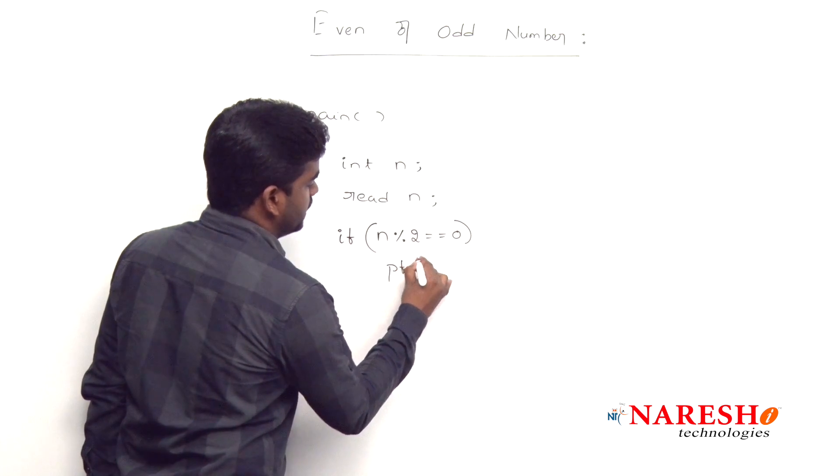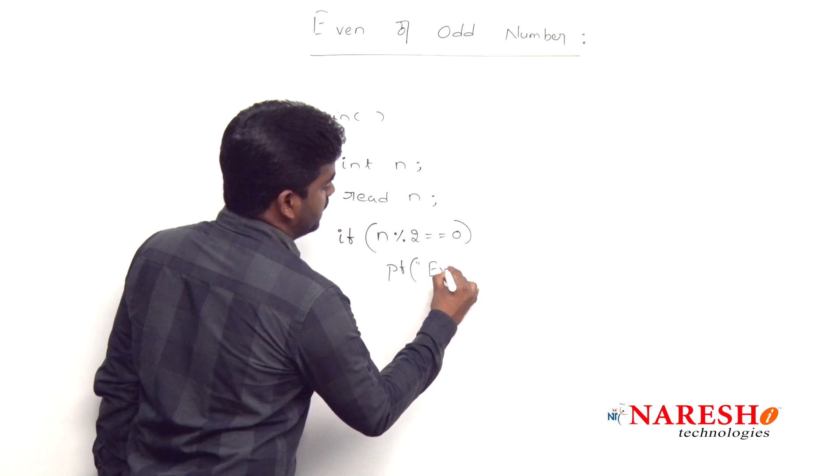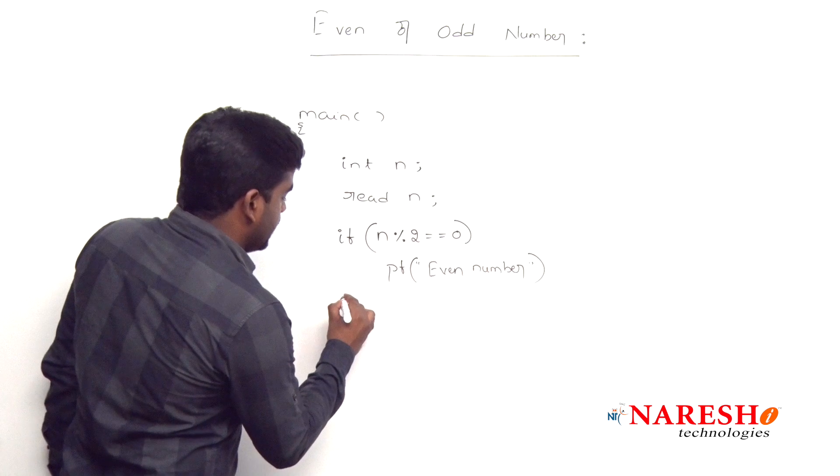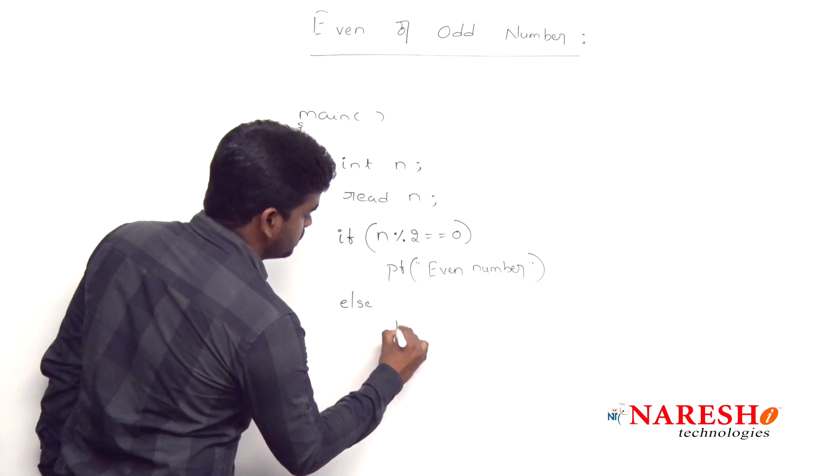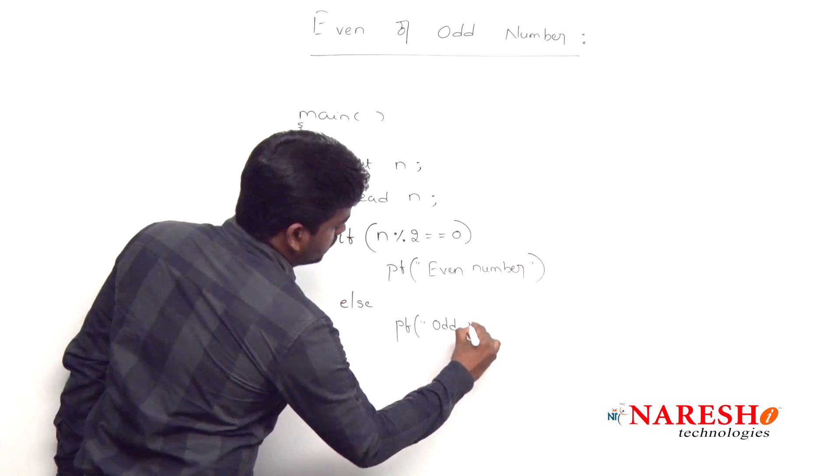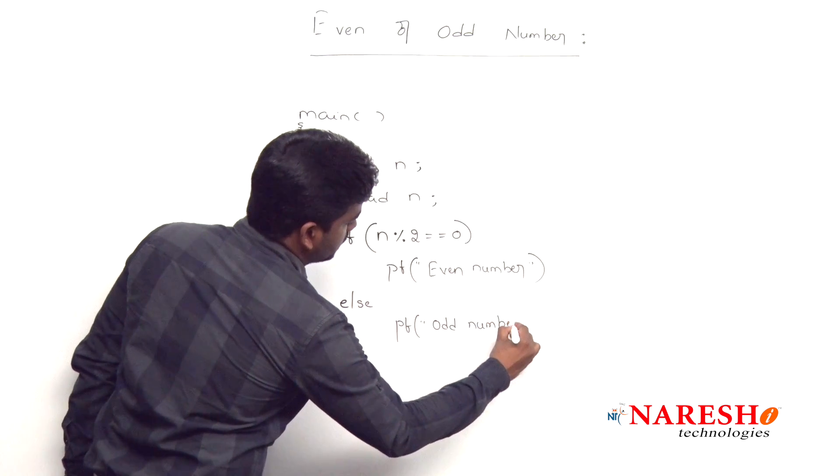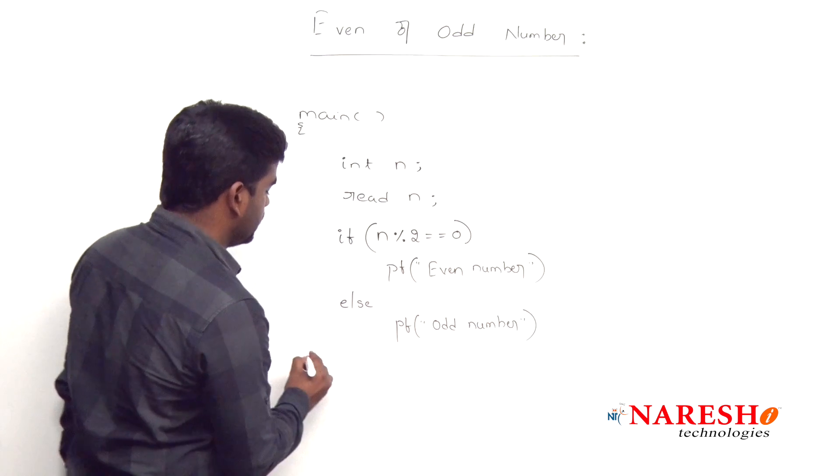Then we can call it as just printf, this is even number. Else, if it is not divisible, then we are writing it is an odd number or not even number, any message you can define.